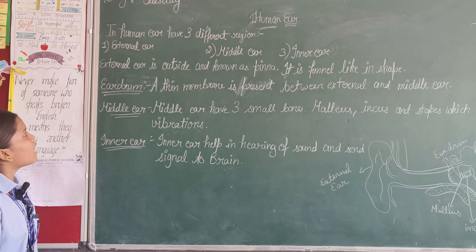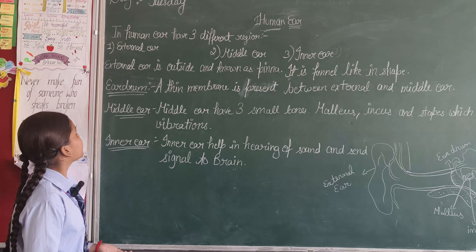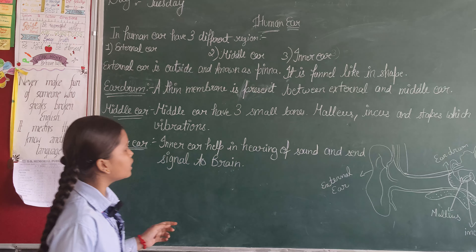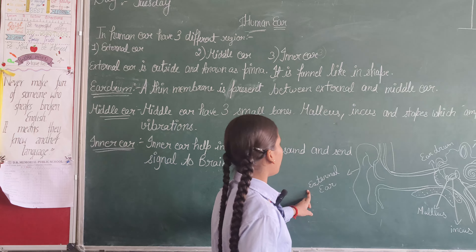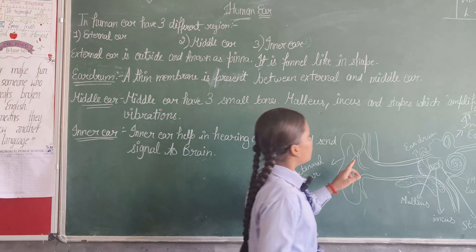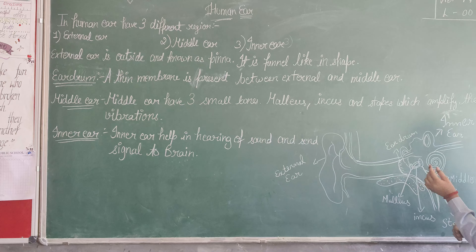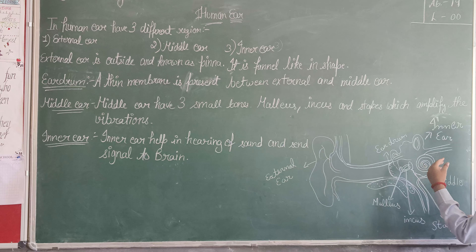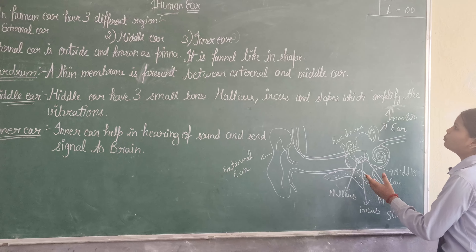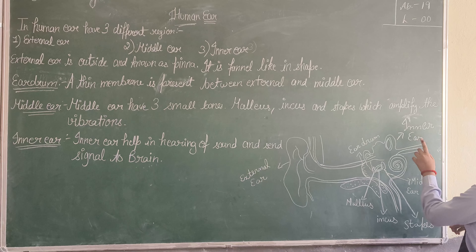The human ear has three regions: the external ear, which is outside; the middle ear, which is inside; and the inner ear, which is inside.